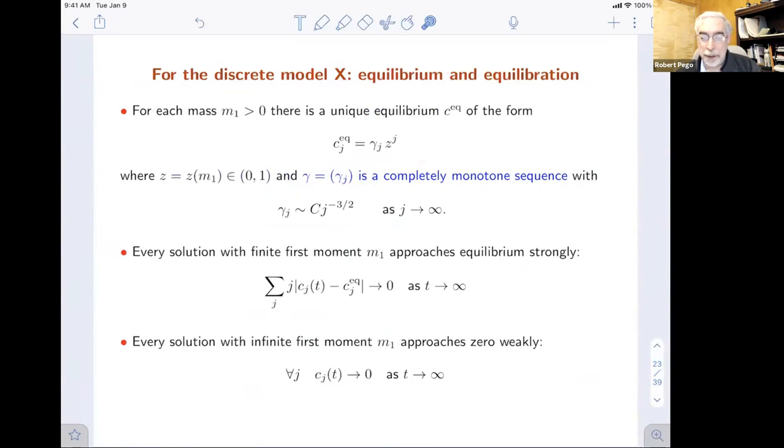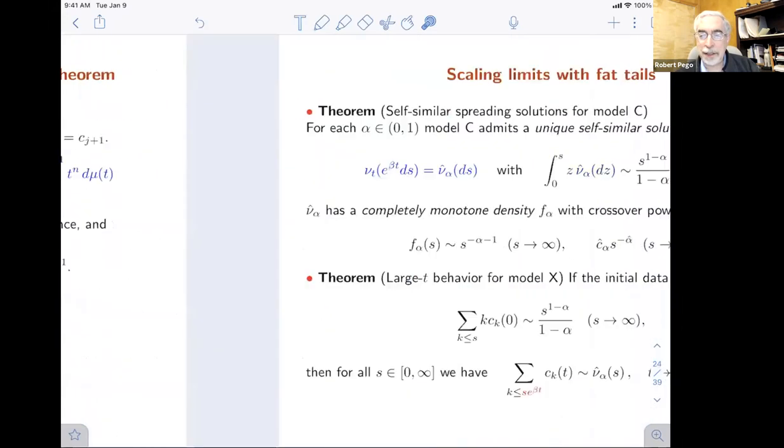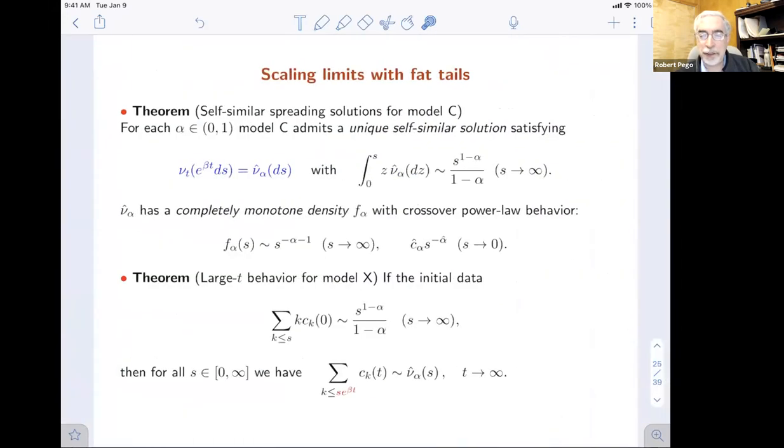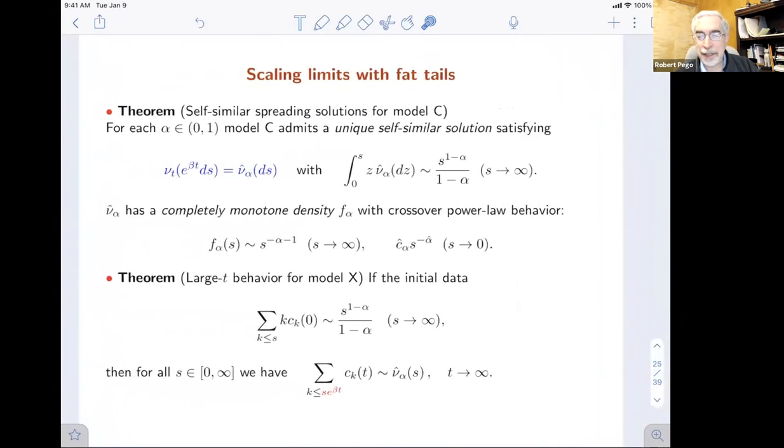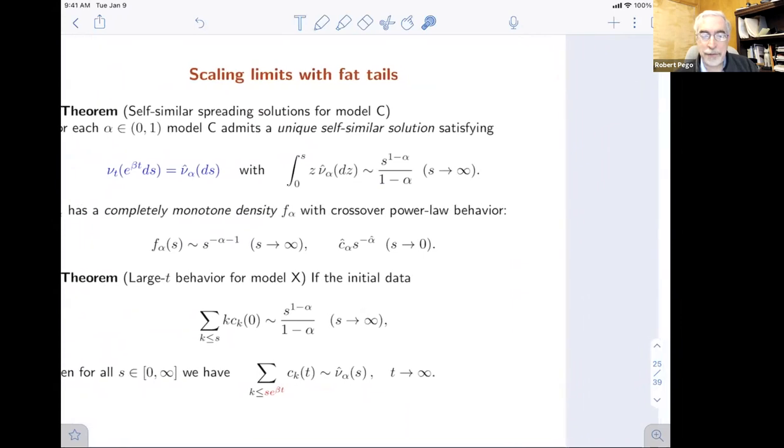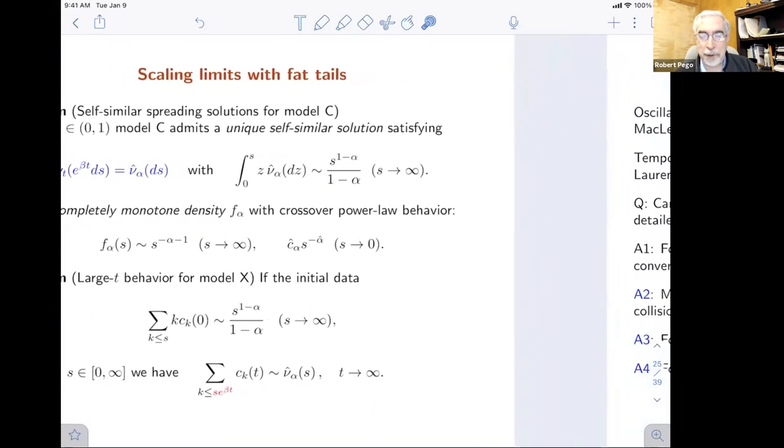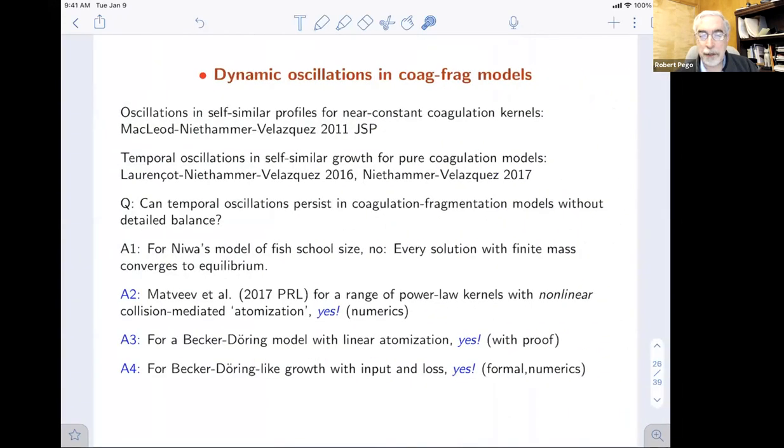We can prove global convergence for data with finite first moment. They approach equilibrium strongly. Every solution with an infinite first moment actually approaches zero weakly. I'm running a little long. I'm going to skip the discussion of scaling limits with fat tails, which we extended that result to data with infinite first moments. So I'll move on and just talk about oscillations.